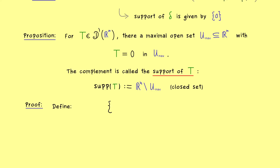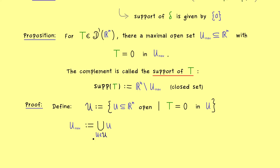Now we need to find such a maximal open set. We look at the whole collection of open sets on which T vanishes — call this collection 𝒰. One natural candidate for U_max is the union of all sets U in 𝒰. There cannot be any bigger set, because all possible open sets are already included. However, one question remains: does T actually vanish on this union? We have this property for each subset, but it's not clear it holds for the union, so this is exactly what we have to show.